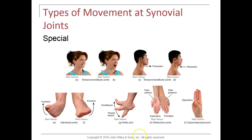Regarding your radioulnar joint in your forearm, you can rotate your antibrachium upward or downward. If you flex your elbow and your palms are facing upward toward the sky, that's called supination. If your arms are at your sides and you turn your palms posteriorly to face behind you, that's called pronation. Similarly, if your arms are flexed at the elbow and you turn your palms to face the ground downward, that's also a pronation.